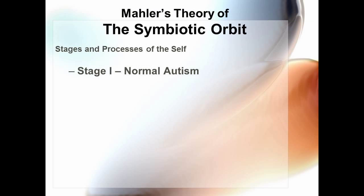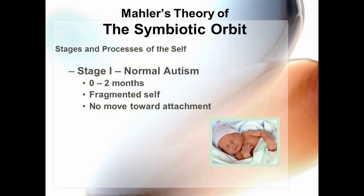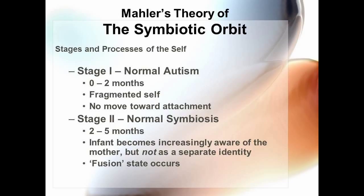Stage one is called normal autism, which takes place from zero to two months. In this stage, the child has a fragmented self and there is no movement towards attachment. In stage two, normal symbiosis, occurring from the second to fifth month, the infant becomes increasingly aware of the mother, but not as a separate identity. A fusion state occurs in which the child and mother symbolically fuse with one another.